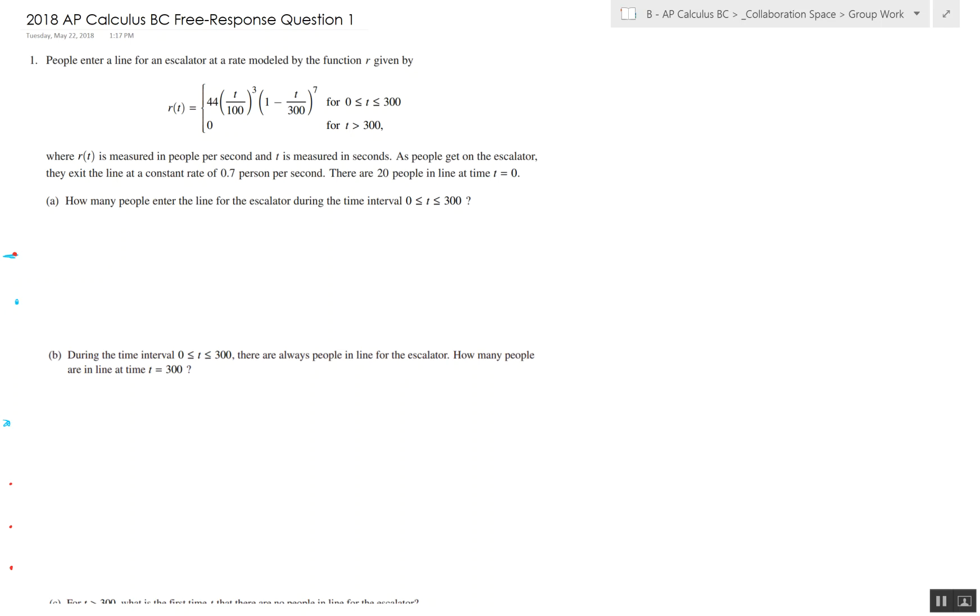To do so, all we have to do is find the integral from 0 to 300 of this function up above, which is r of t. And if we plug in the value, if we just plug that into a calculator, the integral is equal to 270 people. So there you go, that's the answer for part A.